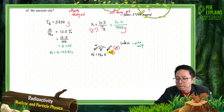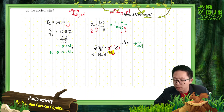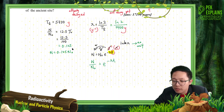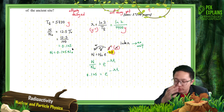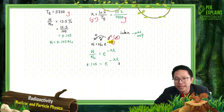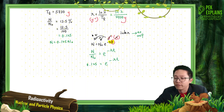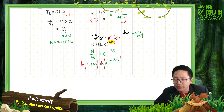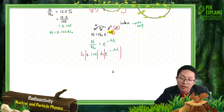Now, continuing with the equation: N/N₀ = e^(−λt), so 0.125 = e^(−λt). Rather than substituting λ's value immediately, I'll take the natural log of both sides first — that's the smart way — to bring down the exponent: ln(0.125) = −λt.